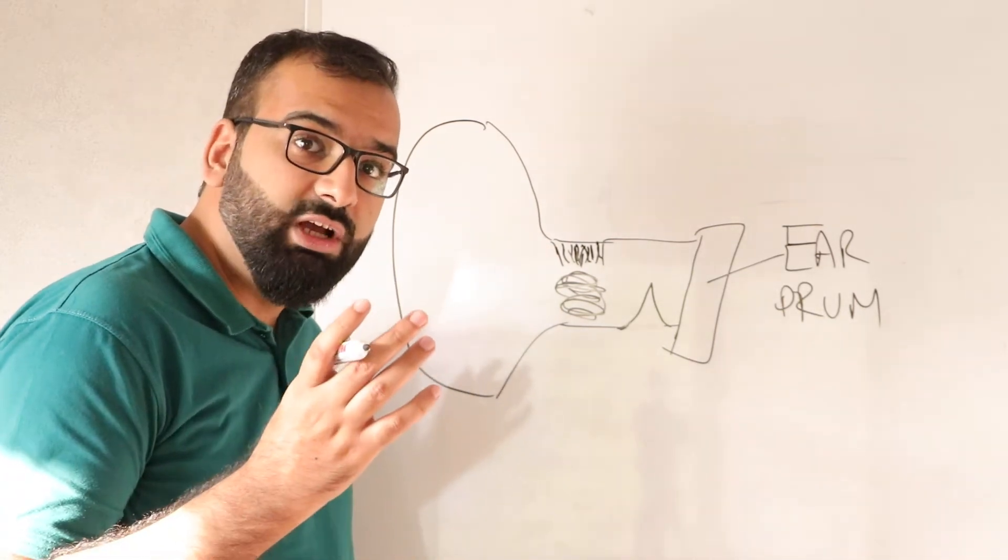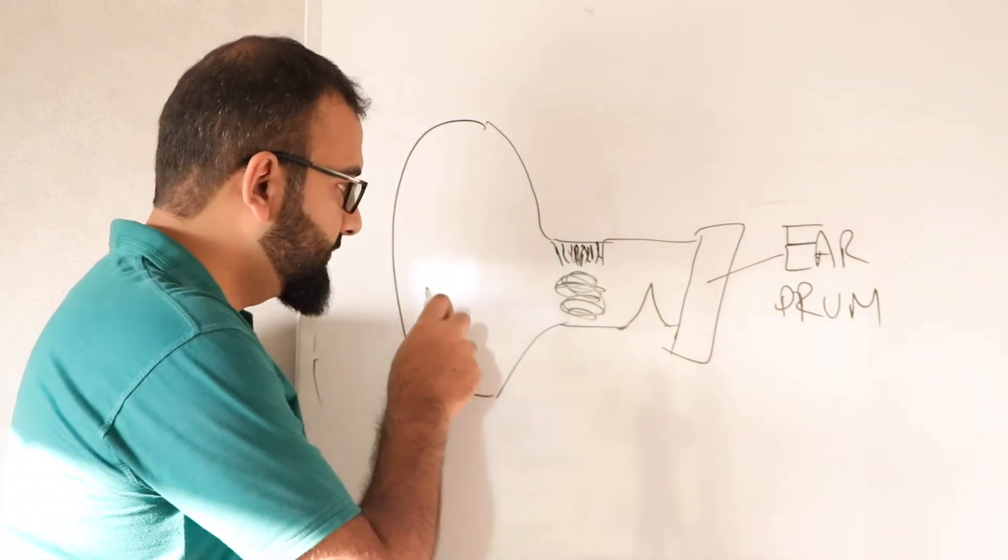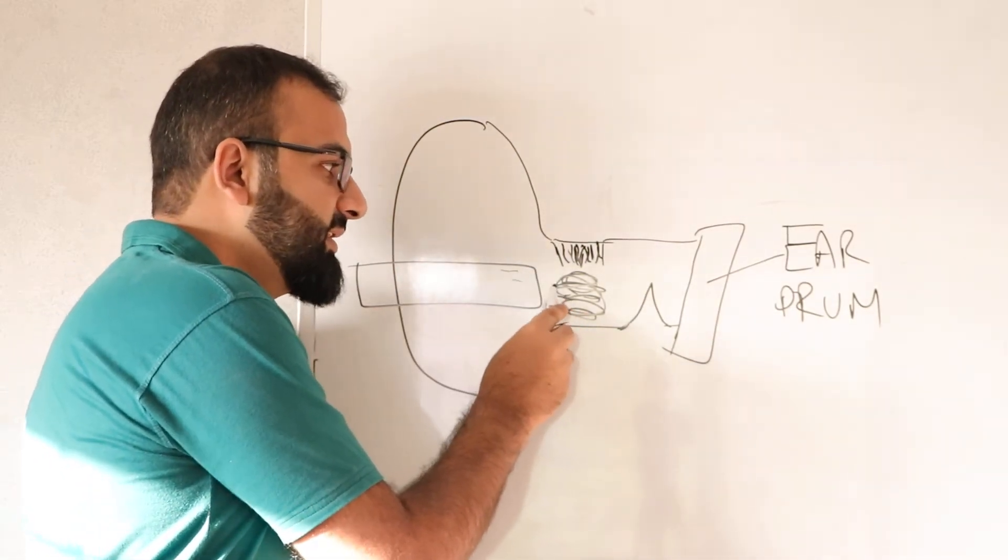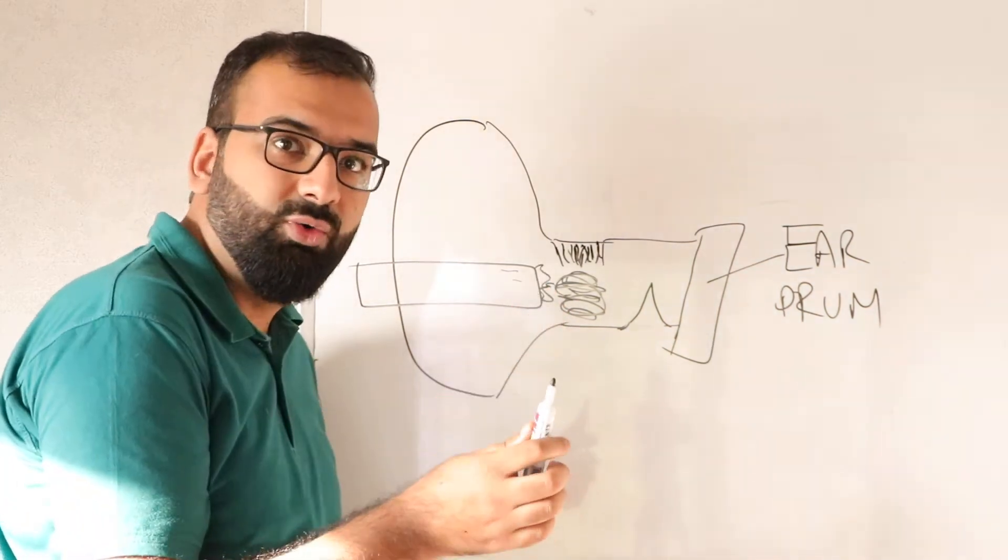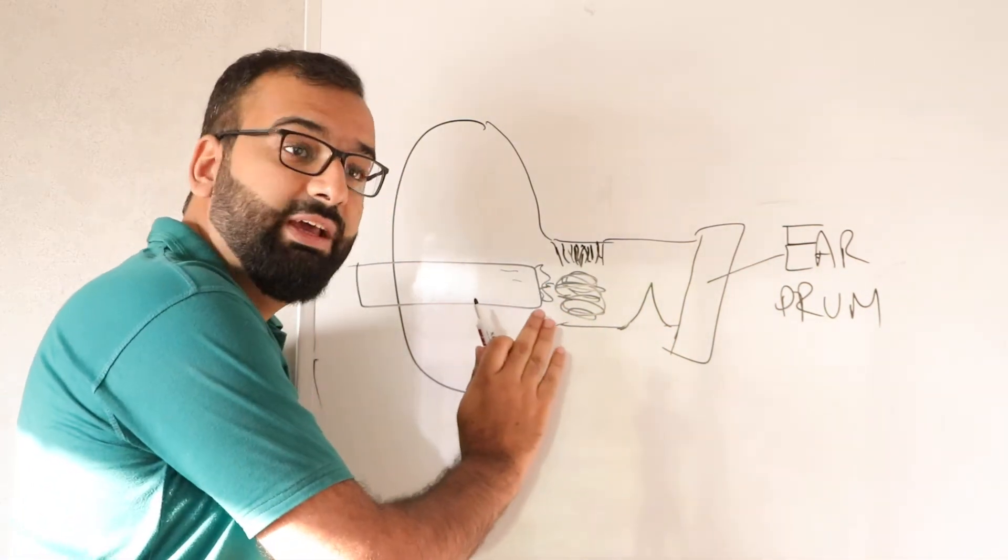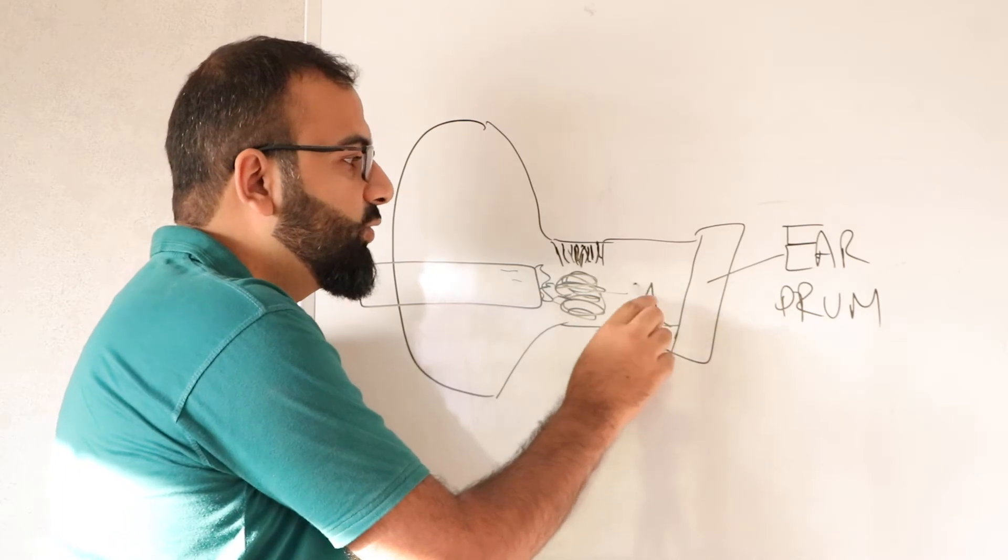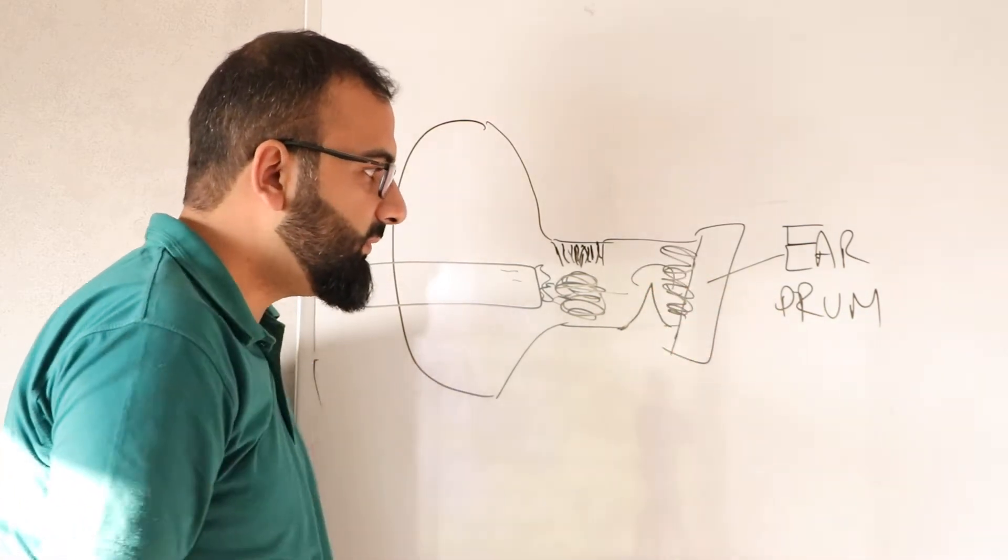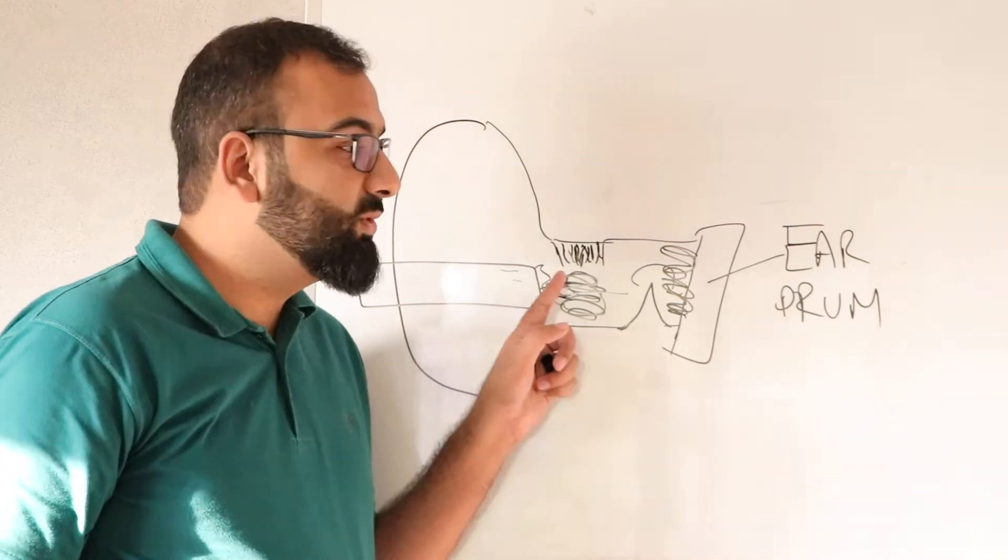So what happens when you use a cotton tip or Q-tip? When you use a cotton tip or Q-tip, some of this wax you will be taking out, but the rest of this wax you would be pushing over this edge and right next to your eardrum.